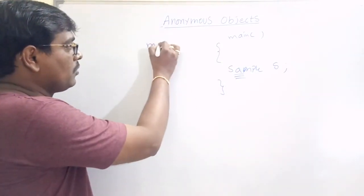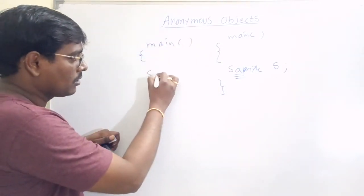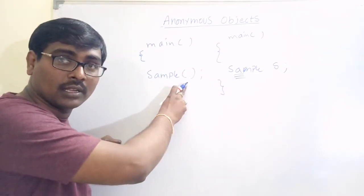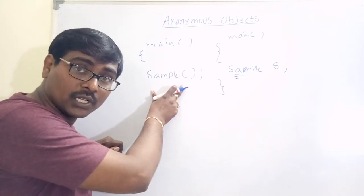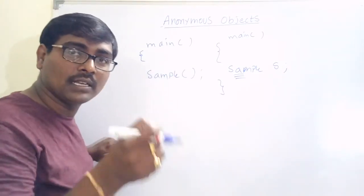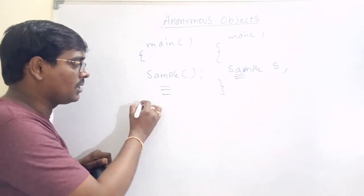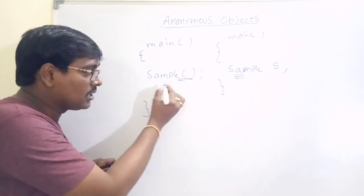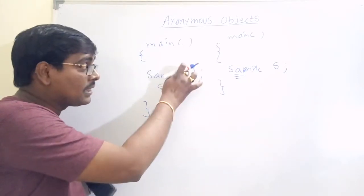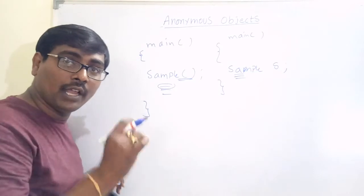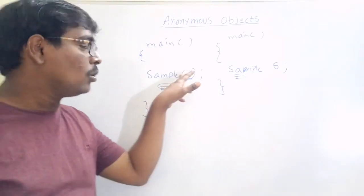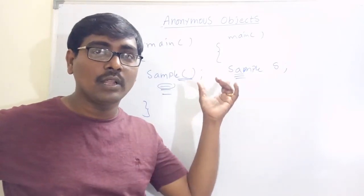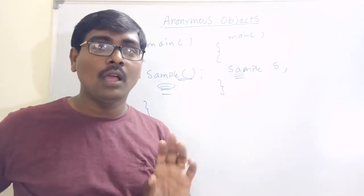Suppose if you are writing like this: Sample(). Observe — this is not a constructor call with a named object; this is another way of creating an object, an object without a name. Whenever we move to the next statement, the object is destroyed automatically because there is no name.